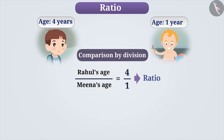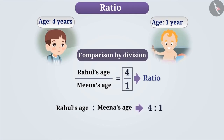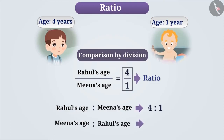Therefore, Rahul's age to Meena's age using comparison by division is a ratio, which is represented as 4 is to 1. Similarly, we can say that the ratio of Meena's age to Rahul's age is 1 is to 4. We denote ratio by the symbol colon to compare two quantities.